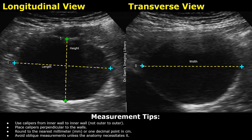For example, if a measurement is 28.24 millimeters, then you can round it off to 28 millimeters. And if you convert this into centimeters, it will be 2.8 centimeters. Oblique measurements can be taken in cysts which are not very smooth or rounded and have an irregular shape.